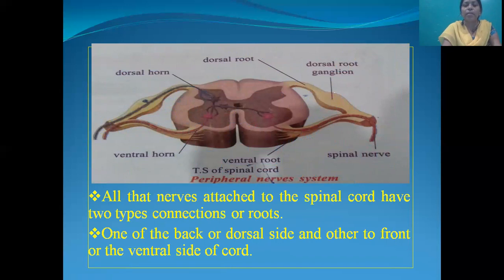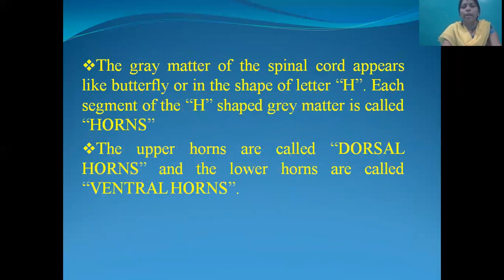All the nerves attached to the spinal cord have 2 types of connections or roots — one at the back on the dorsal side and the other at the front on the ventral side of the cord. The grey matter of the spinal cord appears like a butterfly or in the shape of the letter H. Each segment of the H-shaped grey matter is called a horn. The upper horns are called dorsal horns and the lower horns are called ventral horns.